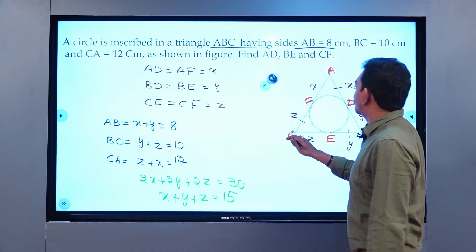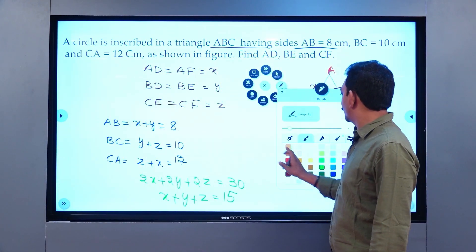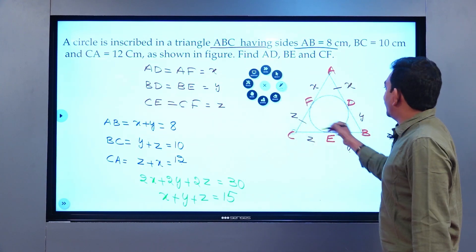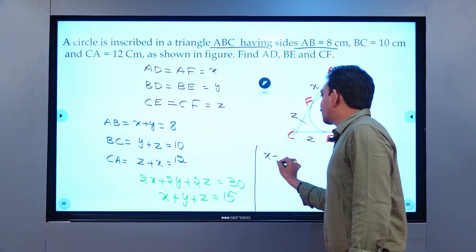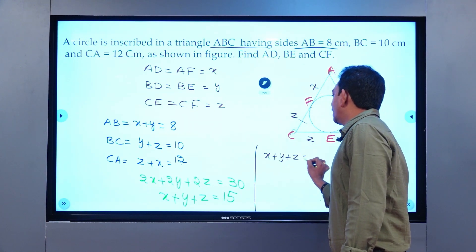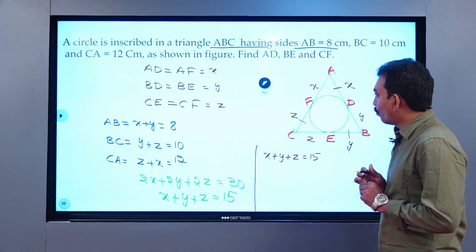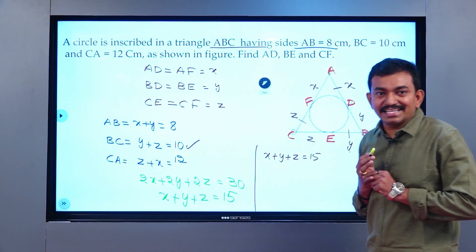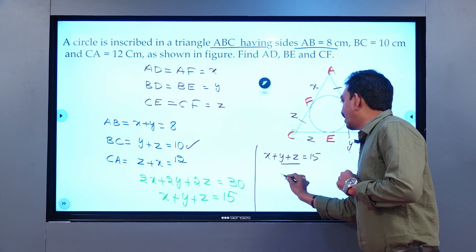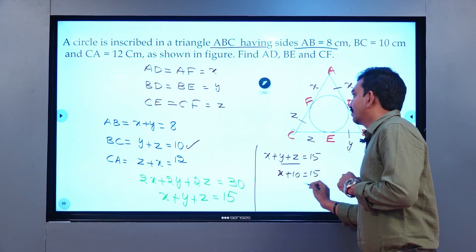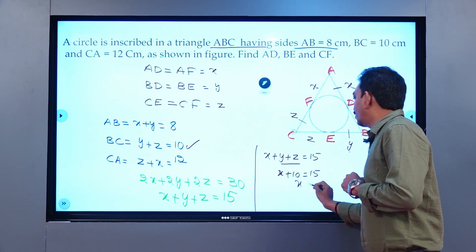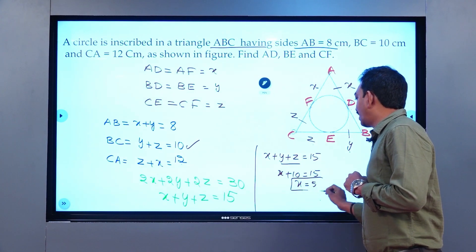But we want the length of the tangents AD, BE, and CF. We know that X plus Y plus Z is 15. What is Y plus Z? Y plus Z is 10. So X plus 10 equals 15. What is X value then? 15 minus 10, which is 5 centimeters.